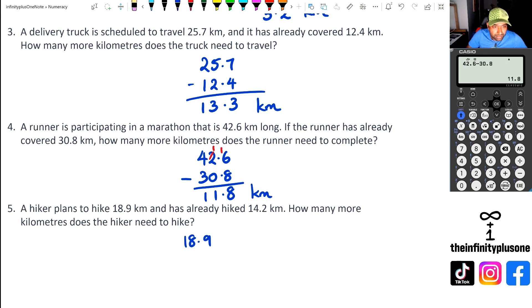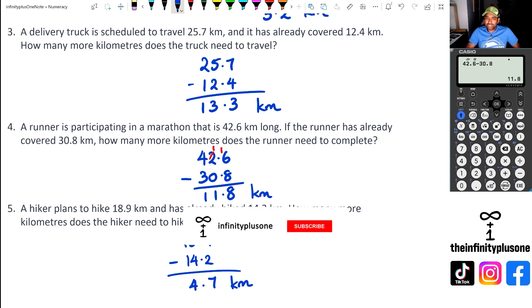Lastly, we've got the hiker that's planned 18.9 kilometers and has already covered 14.2 Ks. So we've got to subtract that. So we've got 9 take away 2 is 7. 18 take away 14 is going to be 4. So 4.7 kilometers left for the hiker to complete his hike. So those are just some really quick examples for doing subtracting decimal word problems.